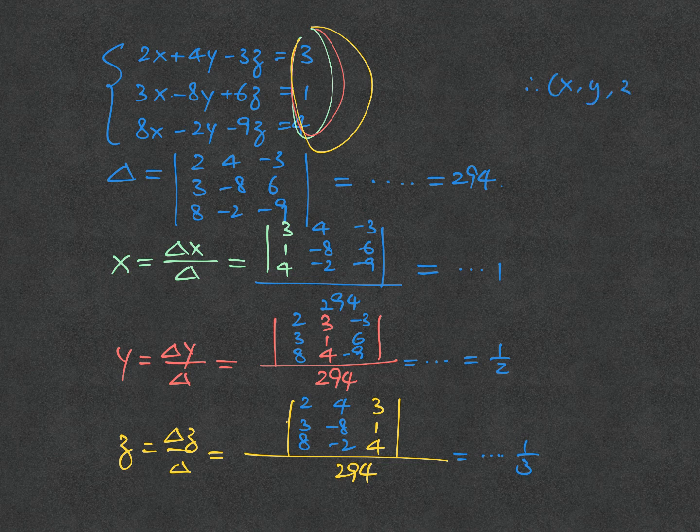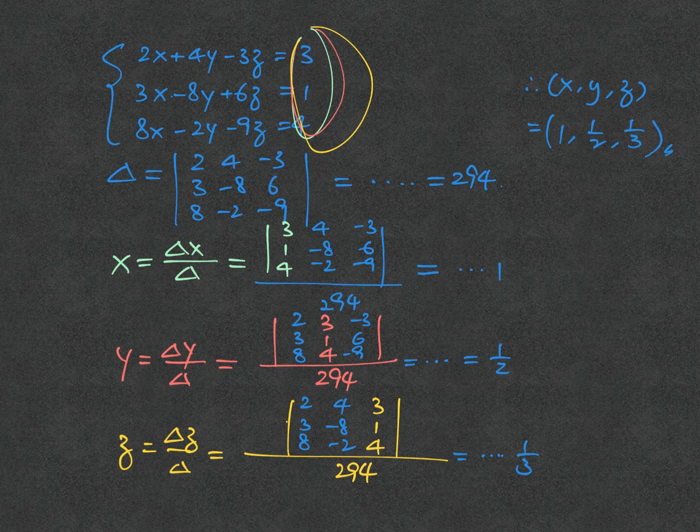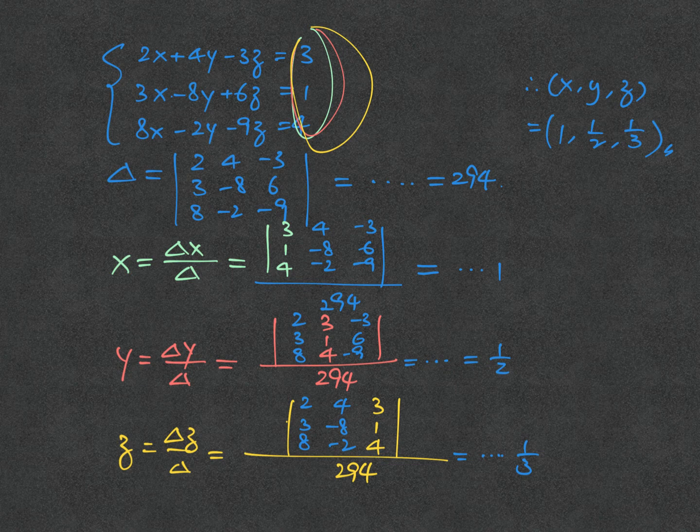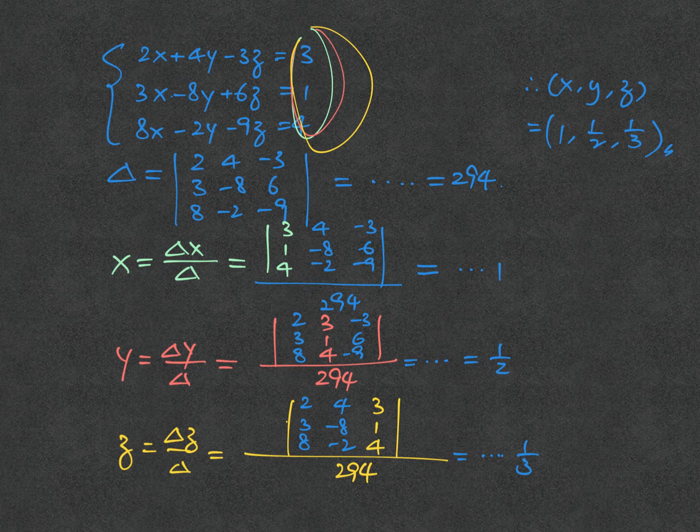Then last, draw the conclusion stating that x, y, z are 1, one-half, and 1 over 3, respectively. Now you'll definitely find that Cramer's rule is a very big gift for you to solve a system of equations which has unique solution.